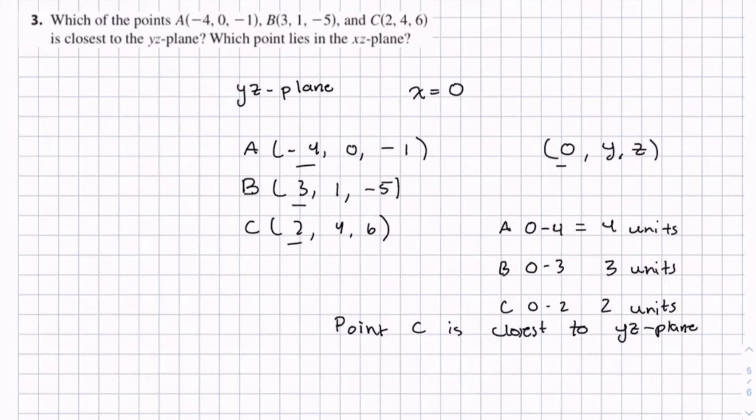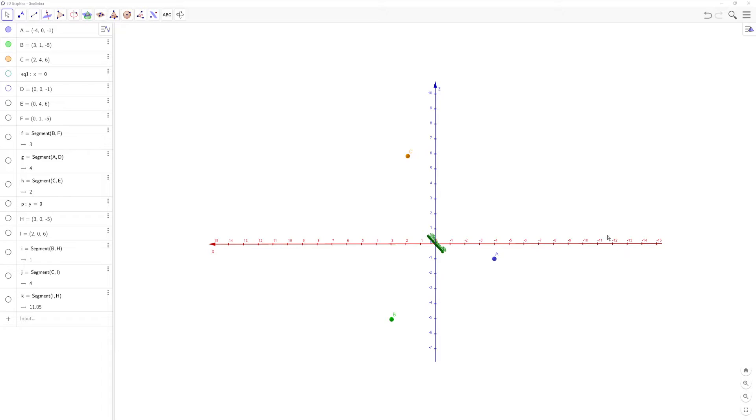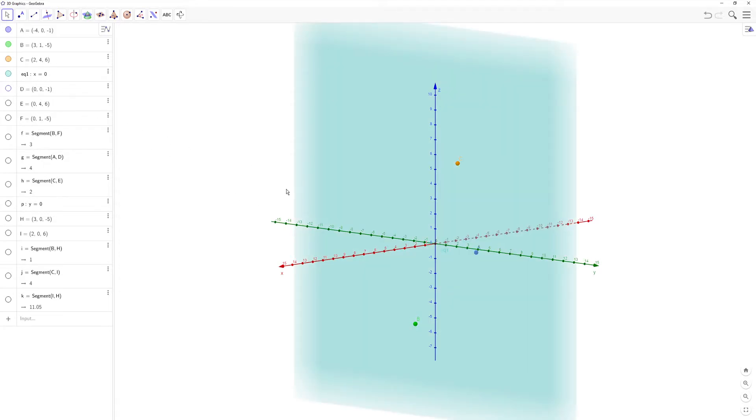And I just want to drive this point more, that when x equals 0, it's in the yz-plane. And we're going to look at a 3D graph of this. So we have all our three points, A, B, and C, and this 3D coordinate axes. We have the x, y, and z, and you see the equation here, x equals 0. This creates the yz-plane.